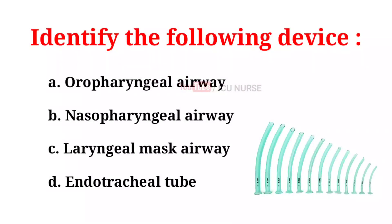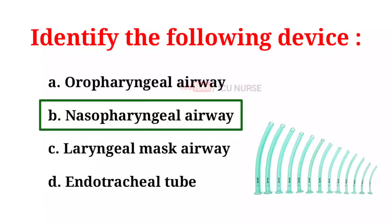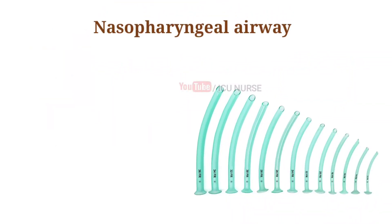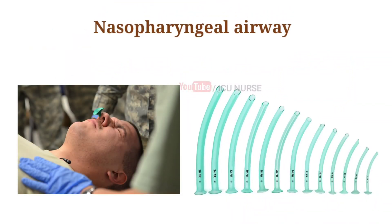Identify the following device. A. Oropharyngeal airway. B. Nasopharyngeal airway. C. Laryngeal mask airway. D. Endotracheal tube. And the correct answer is B. Nasopharyngeal airway. Nasopharyngeal airways are used to keep the airway open and can be used with patients who are conscious or semi-conscious.